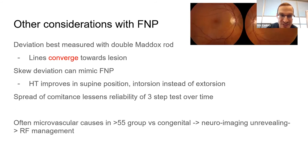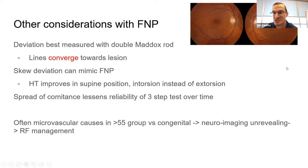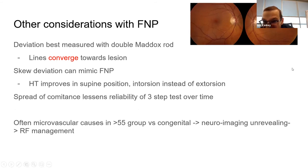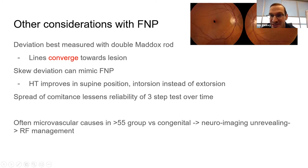There's also a torsional component — if they describe a double Maddox rod test, lines converging toward the lesion indicate excyclotorsion. In this right eye example you can see the macula is positioned too high relative to the optic nerve, indicating excyclotorsion.